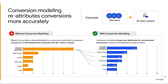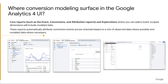With GA4 conversion modeling, the total number of conversions will not change — only the attributed conversions for each channel will change. Reports in Google Analytics will automatically attribute conversion events across channels based on a mix of observed data where possible and modeled data where necessary. You can access modeled conversion data in GA4's core reports, such as the events report or the conversions report, and explorations that use event scope dimensions. These reports automatically attribute conversion events across channels using a mix of observed and modeled data.